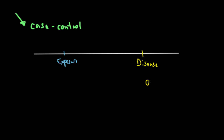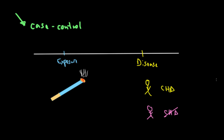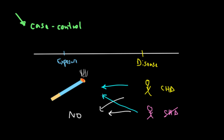Let's say we're interested in coronary heart disease. The yellow patients have coronary heart disease, and the pink individuals do not. We're particularly interested in the relationship between smoking cigarettes as a risk factor. We compare people who have coronary heart disease to see what proportion had this exposure versus those who didn't, and do the same for the non-diseased population. By comparing how many in each group smoked or didn't, we get an idea of what kind of risk factor smoking is for coronary heart disease.